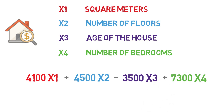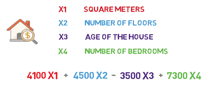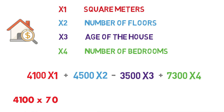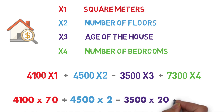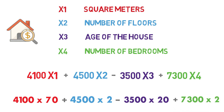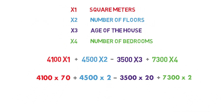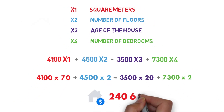What do these coefficients mean? If we had a hypothetical house that is 70 square meters in size, has 2 floors, is 20 years old, and has 2 bedrooms, the price according to these coefficients would be 240,600 euros.